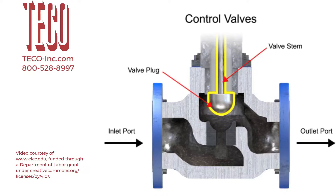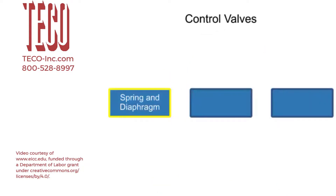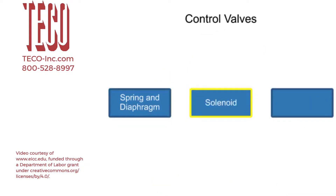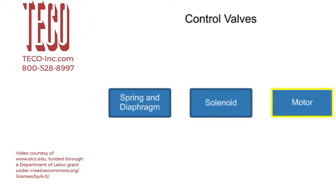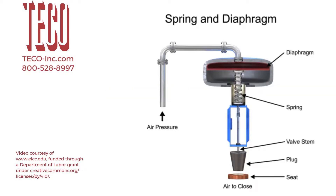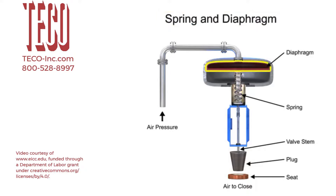Three actuator types are used in control valves and they include spring and diaphragm, solenoid, and motor. As the name suggests, the spring and diaphragm actuator uses a spring and a diaphragm to move the valve stem and plug.